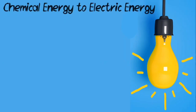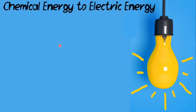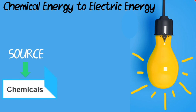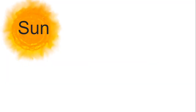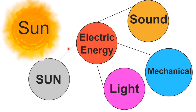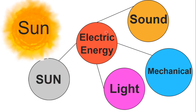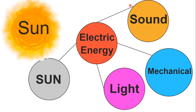Now let's see another transformation — electrical energy from chemical energy. We use electrical energy in our everyday life and we get it from chemicals, because we use battery energy which produces electrical energy. Dear students, the main source of energy is the sun. From sunlight we can get electrical energy using solar panels. Solar panels transform light energy into electrical energy. We also get sound energy using speakers, mechanical energy using electric fans, and light energy from electrical energy using light bulbs.